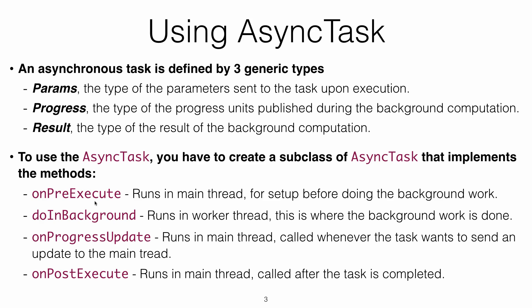onPreExecute is the first method called when you execute the AsyncTask. It's usually used for setting up data before the background operation. doInBackground receives some parameters and works on them in the background — for example, a URL to download a picture from, or two matrices you want to multiply.